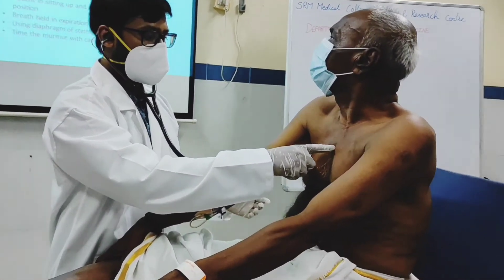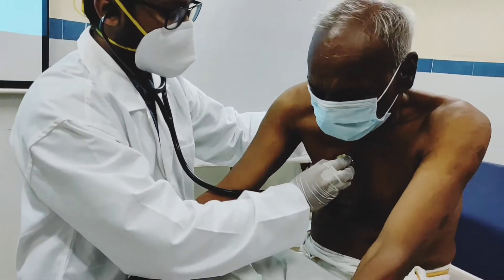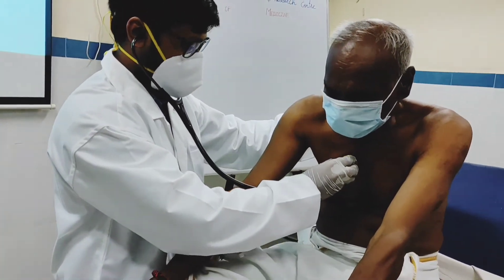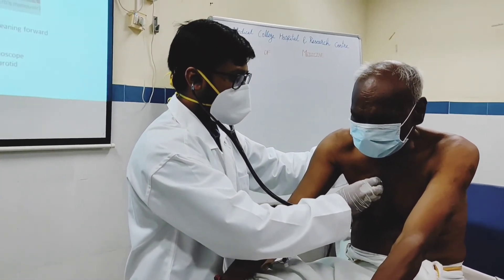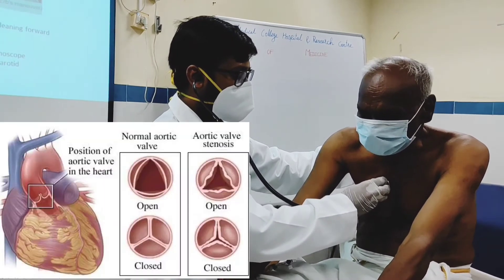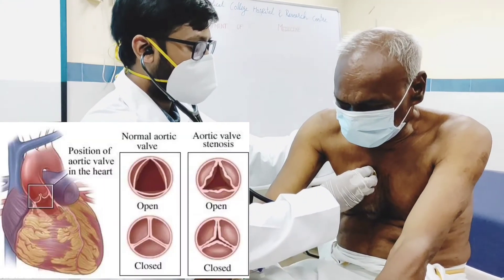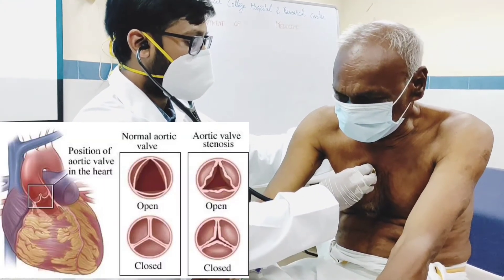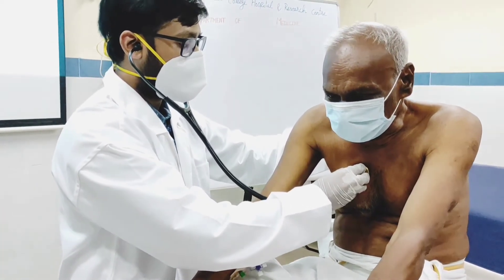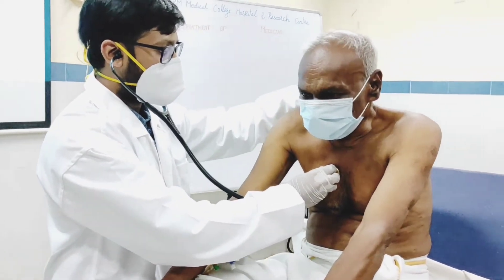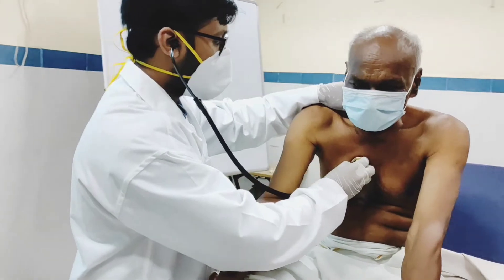Auscultation of the aortic area: patient in sitting up and leaning forward position, breath held in expiration. Auscultate using the diaphragm of the stethoscope and time the murmur with the carotid.